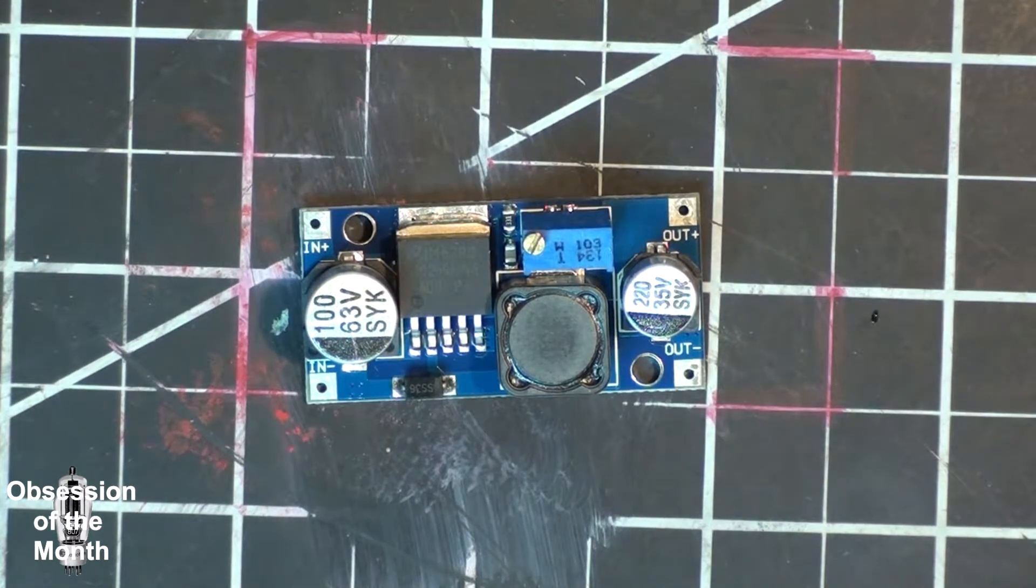I put one of these in my rail vac conversion to LED. Works really well, doesn't take up very much space.